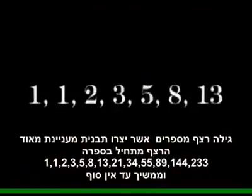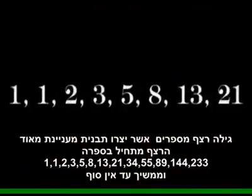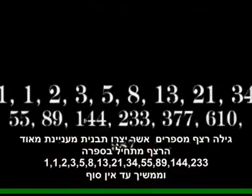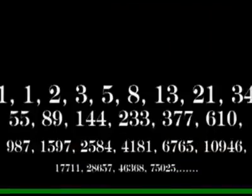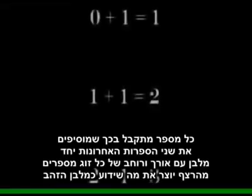The sequence continues: 8, 13, 21, 34 — and continues indefinitely. Each number is obtained by adding the last two digits together. A rectangle with the length and width of any two of the numbers of this sequence forms what is known as the golden rectangle.